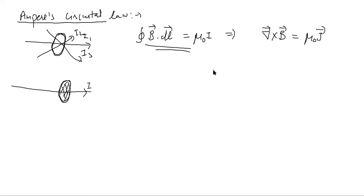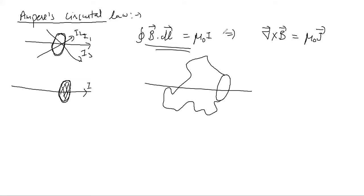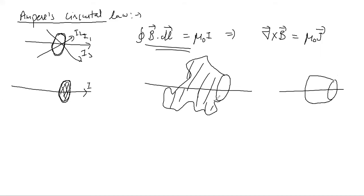There is another way of drawing the surface for which the boundary is this Amperian loop — I can draw a surface of this type also, or a more pleasant-looking one. For this second surface the boundary is still given by the same Amperian loop, and you still have B dot dl equal to mu naught i, because the current is piercing through this surface at this point.